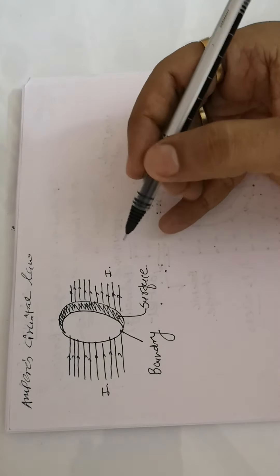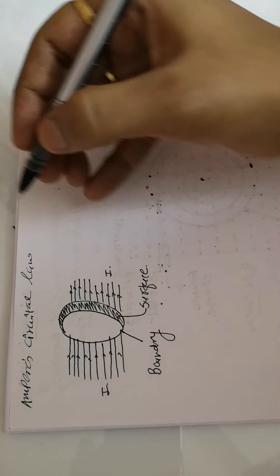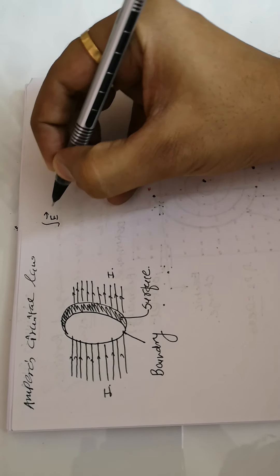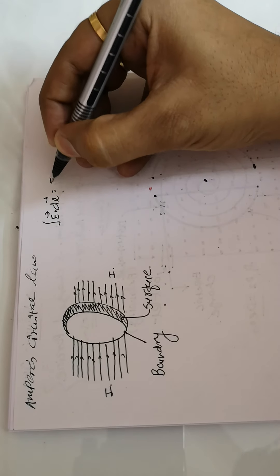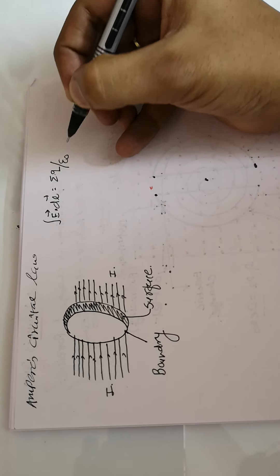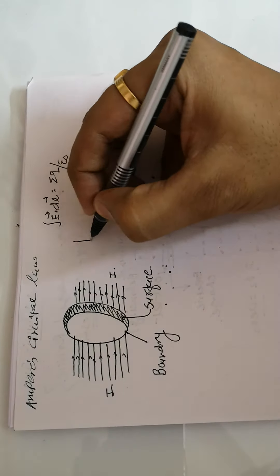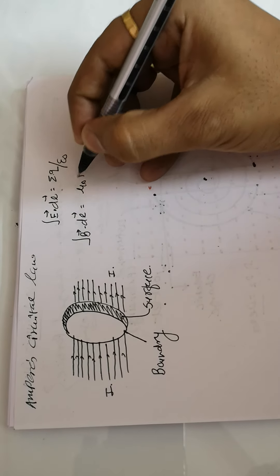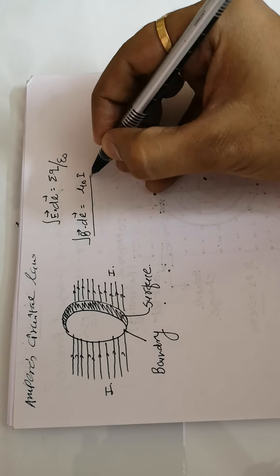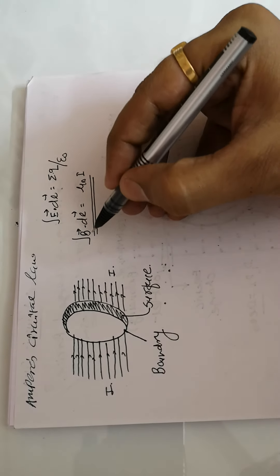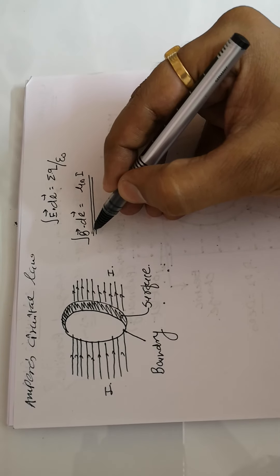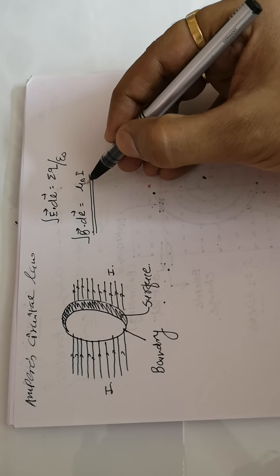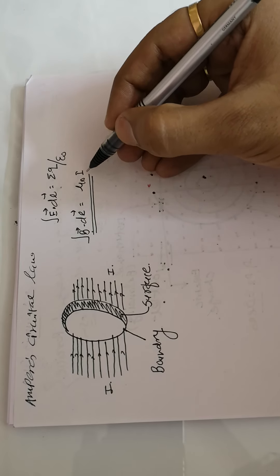Good morning students. Today we will discuss Ampere's circuit law. You are familiar with the analogous law in electric fields where E dot dl equals sigma Q divided by epsilon zero. Similarly, for magnetic fields, B dot dl equals mu zero into I. Ampere's circuit law states that the line integral of the magnetic field along a closed path is directly proportional to the permeability of vacuum and the enclosed current.